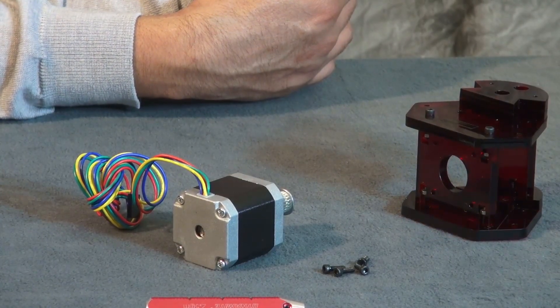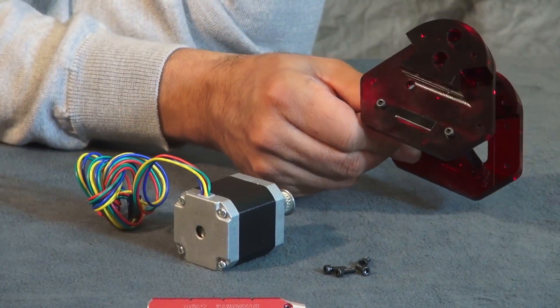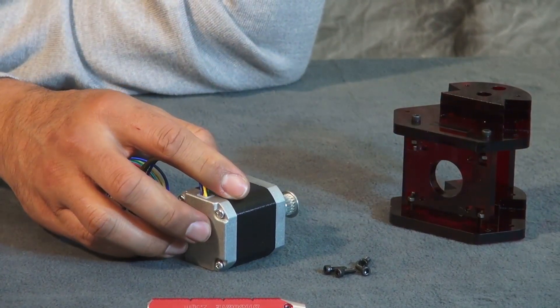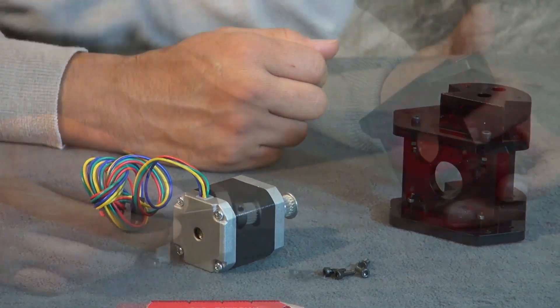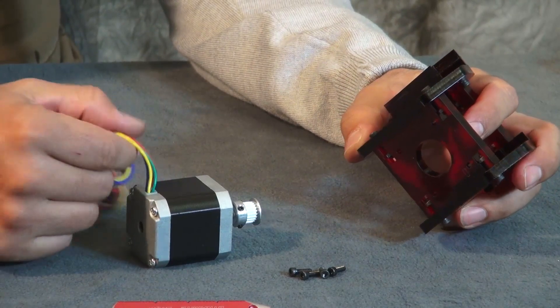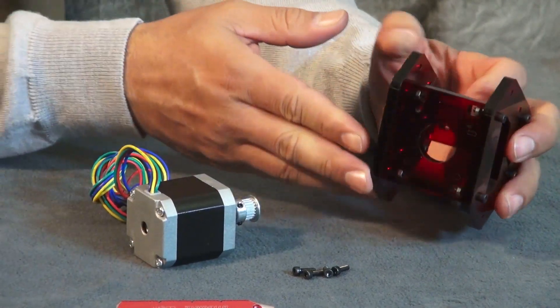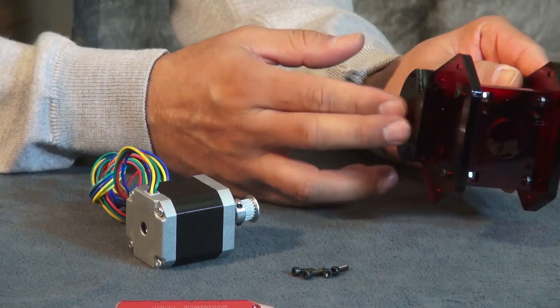In this step we're going to need our bracket assembly, stepper motor, and four M3 by 10 millimeter bolts. When you put this together, you want to make sure your wires are pointing down towards the bottom of your bracket.